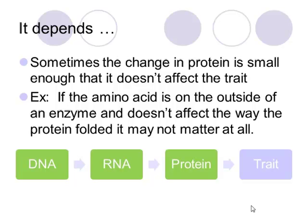Sometimes the change in the protein is small enough where it doesn't exactly affect the trait. If the amino acid is changed but it happens to be on the outside of a protein for a certain enzyme and it doesn't affect the way that protein is folded, it might not impact the trait at all. So the DNA, RNA, and protein change, but the trait does not change.